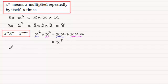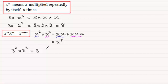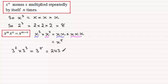For instance, 3 squared multiplied by 3 cubed would be 3 repeatedly multiplied by itself 5 times over, by just adding the powers. And if you do that sum, you should find you get 243.